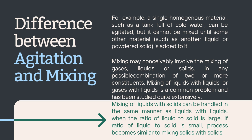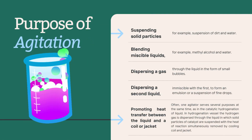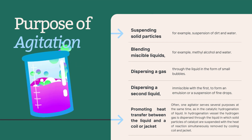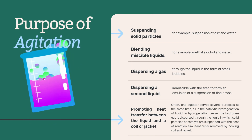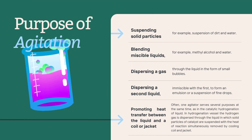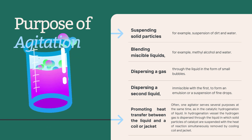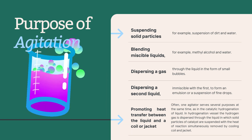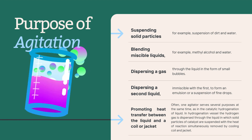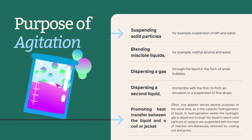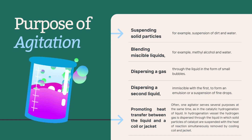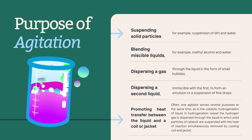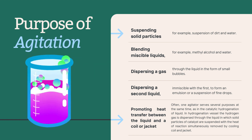Agitation serves several important functions in different processes. The first purpose is suspending solid particles. An example is the suspension of dirt in water — like the way a washing machine agitates clothes to remove dirt and stains. The second purpose includes blending miscible liquids.